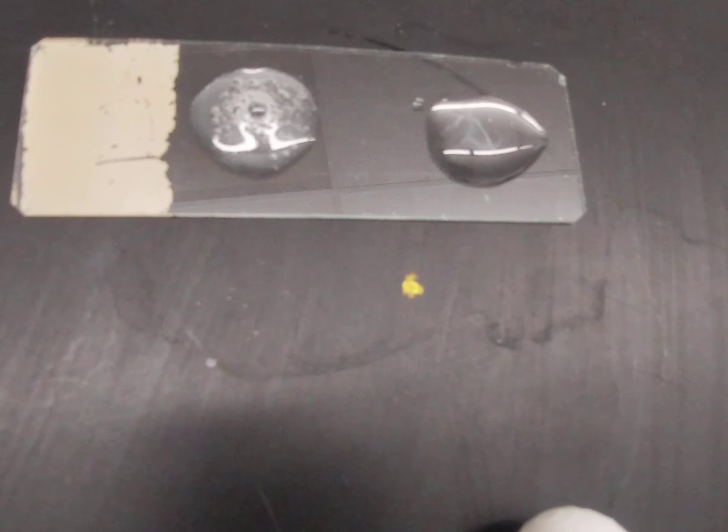You can still see the bacteria on the slide. Sometimes there can be clumps, but it's very clear a positive test has lots of bubbles, whereas a negative test has none.